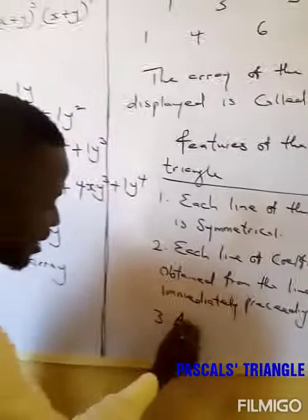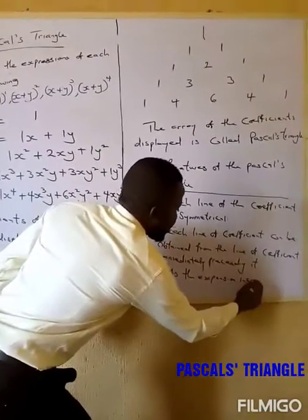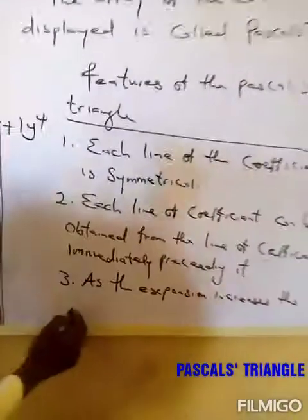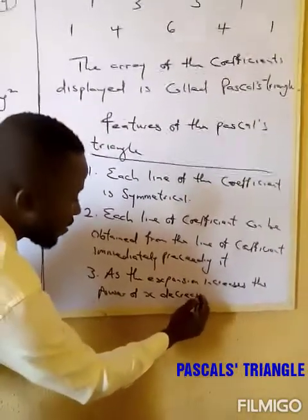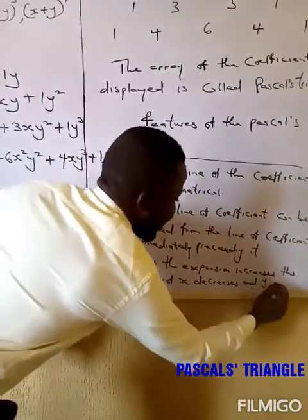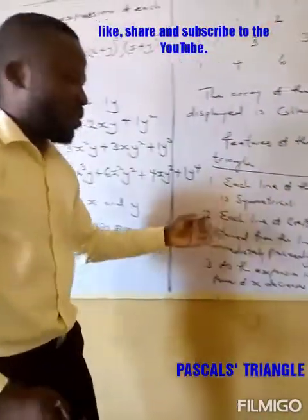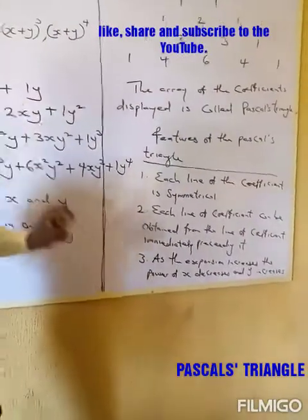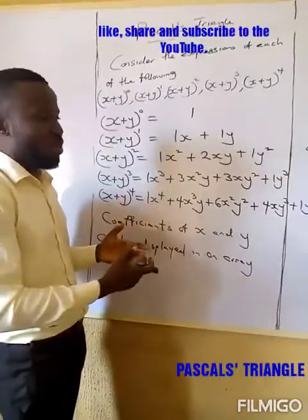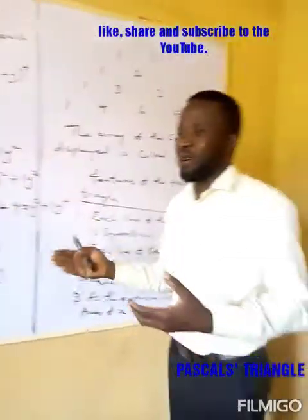Therefore, the third feature of Pascal's Triangle is: as the expansion increases, the power of S decreases while the power of Y increases. These are the three features we consider when using Pascal's Triangle to expand algebraic expressions.